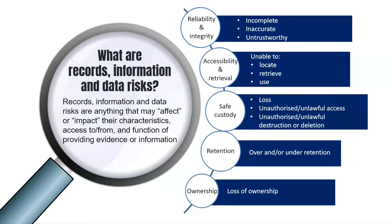In summary, risk to records, information and data are anything that may affect or impact their characteristics, access to and from, and their function in providing evidence or information. For records, information and data within systems, the objectives are to maintain their reliability, integrity, accessibility and retrieval by having controls in place that will ensure their safe custody, retention and ownership during the system design and configuration process, system integration, system migration, record format selection, and moving to cloud-based business or storage environments. While some risks may be a result of failures in technology, others will be due to failures from nonexistent or inadequate processes or procedures, or they may simply be events that just happen.